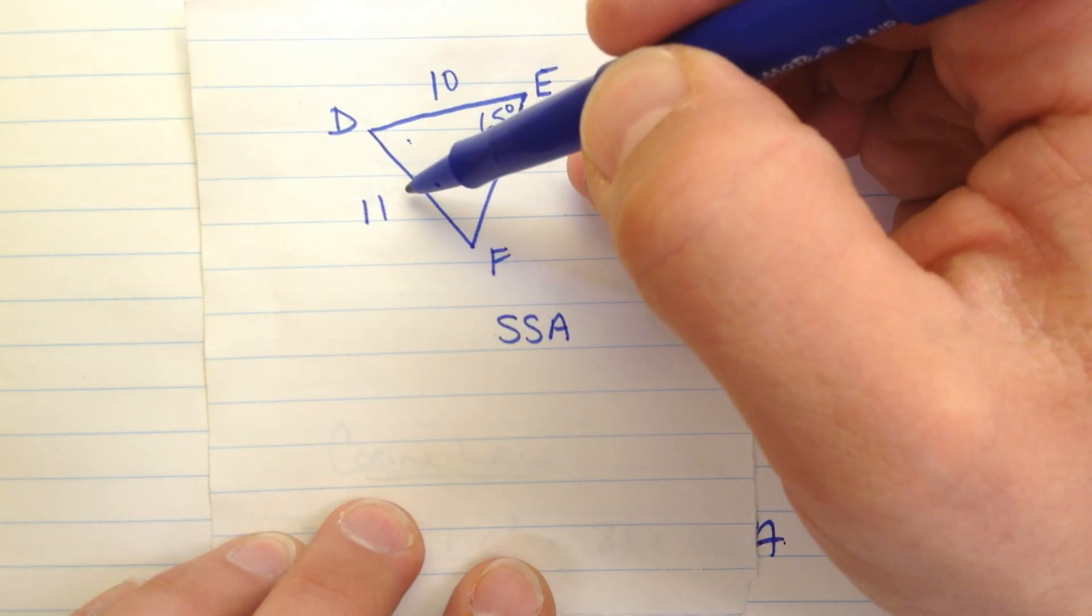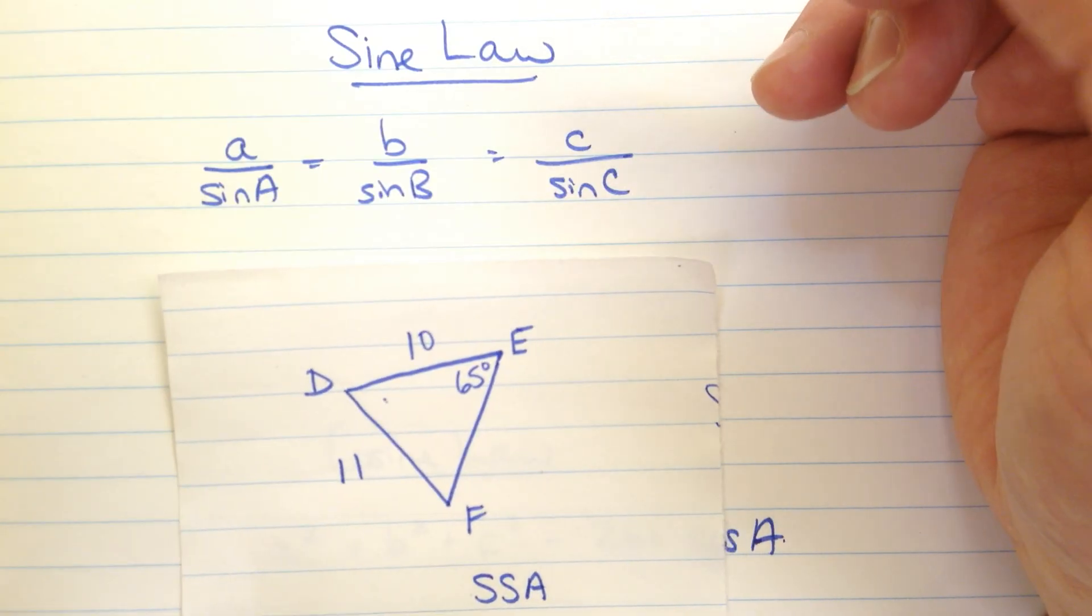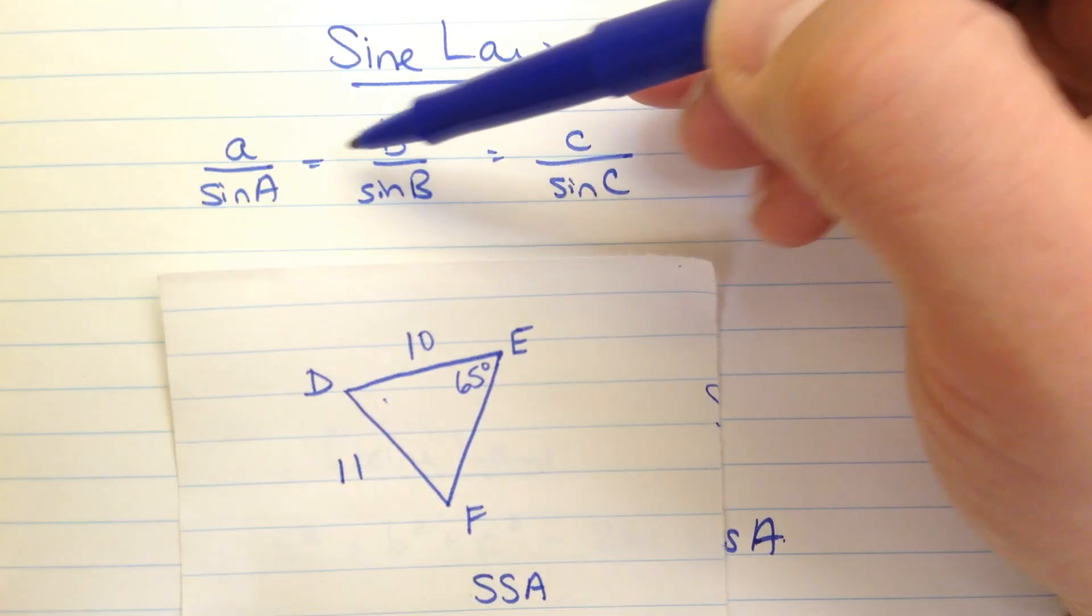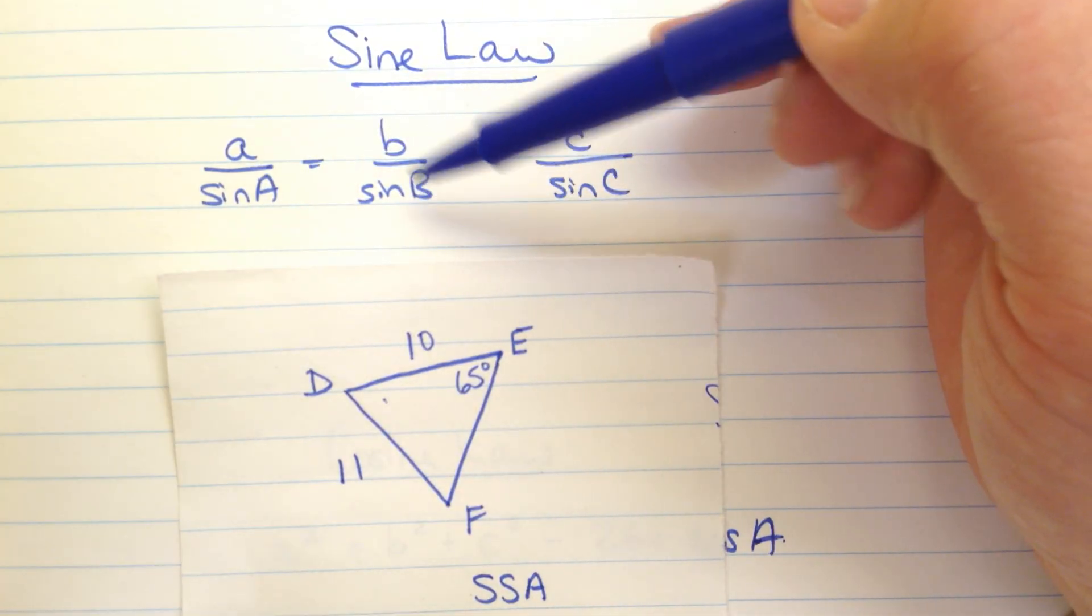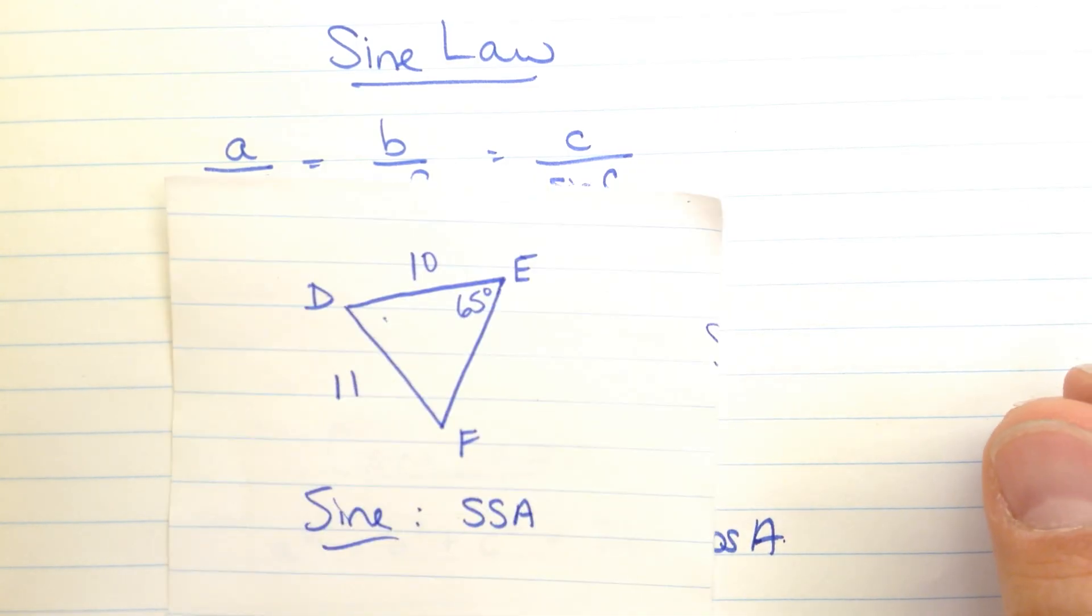To solve this I have an angle and the side across from it and one more side. That looks to me like sine law. I've got two sides and one of the angles that's across from one of those two sides so I just have to find the other angle. That one is sine law.